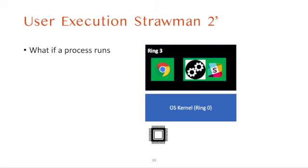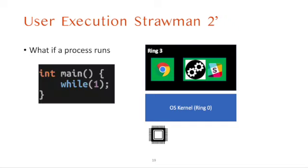How does a modern operating system handle horizontal context switching — switching from one application to another? We first learned about cooperative multitasking, which requires applications to yield their execution to let the OS switch from one app to another. The application must voluntarily yield execution to the OS, and then the OS schedules the other application. However, this approach suffers a problem: if a process runs an infinite loop, there will be no yield, and the loop will never end, so other processes wait indefinitely.